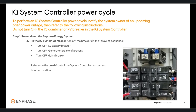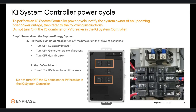The mains breaker could be outside the IQ system controller, towards the grid power supply. Once those are off, move to the IQ combiner box. In the IQ combiner, turn off all of the PV branch circuit breakers. Do not turn off the IQ combiner breaker in the IQ system controller.